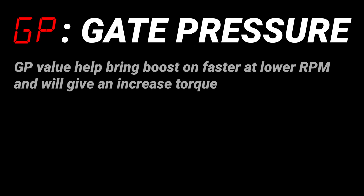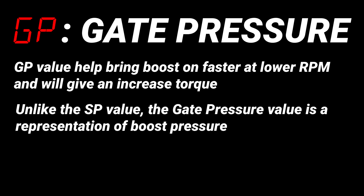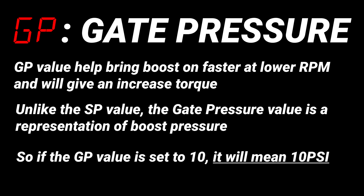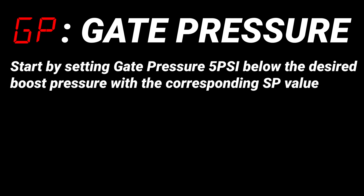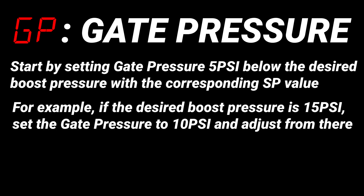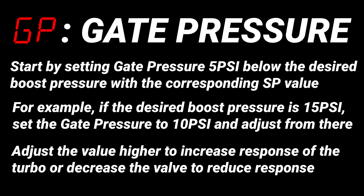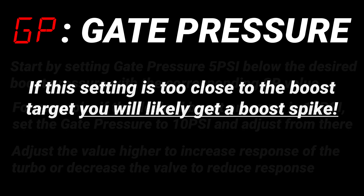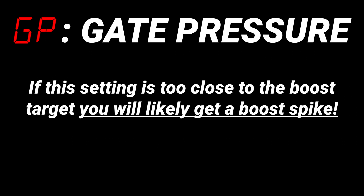GP stands for gate pressure. The GP value helps bring boost on faster at lower RPM and will give an increase in torque. Unlike the set point value, the gate pressure value is a representation of boost pressure, so if the gate pressure value is set to 10 it will mean 10 psi. Start by setting gate pressure 5 psi below the desired boost pressure with the corresponding SP value. For example, if the desired pressure is 15 psi for that specific boost group, set gate pressure to 10 psi first and then adjust from there. Adjust the value higher to increase the response of the turbocharger, or decrease the value to reduce the response. If this setting is too close to the boost target you will likely get a boost spike.